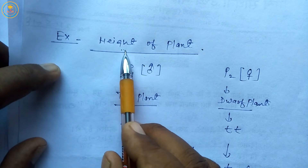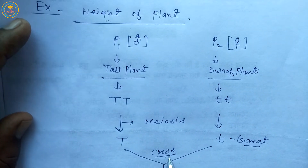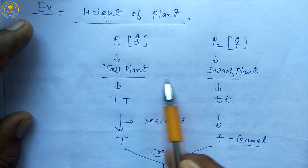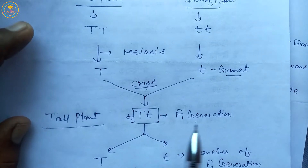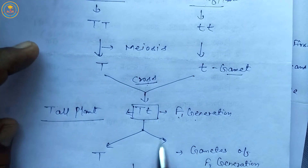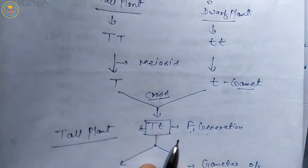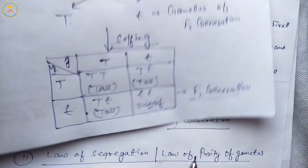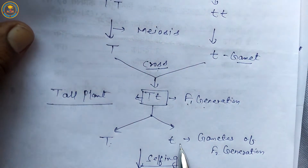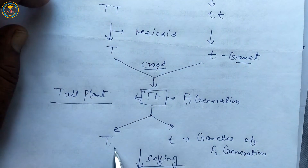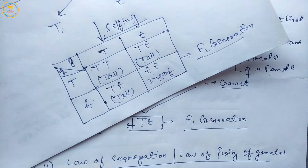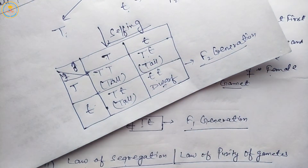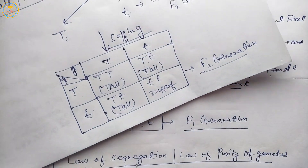So the law of segregation states: when we take a single character or trait and cross two different parent plants, they form the F1 generation. After the F1 generation, gametes are separated from each other — this is called the law of segregation.